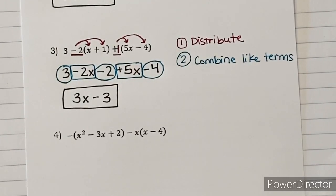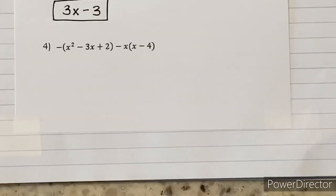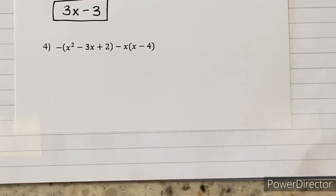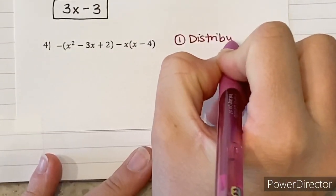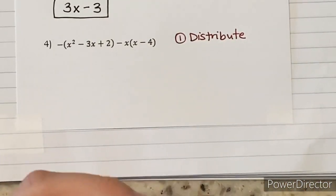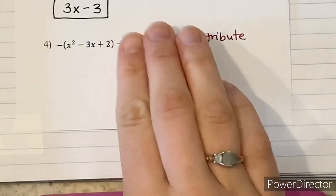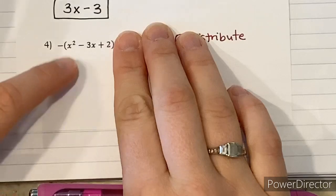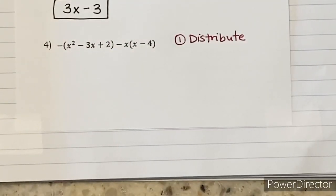This note set is all about practicing distributing, combining like terms, and getting to simplest form. We have one more problem. Number four looks the most intimidating, but follow the same steps and you'll solve it. We see parentheses, so we distribute first — that's how we get rid of them. For the first set, what number is sitting out front? It's not just a negative sign — there's an understood one there.